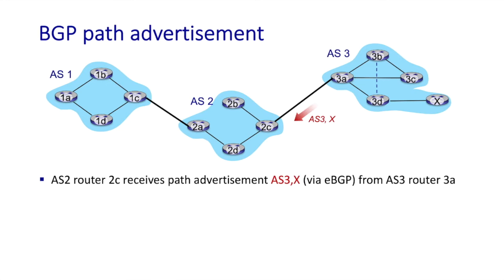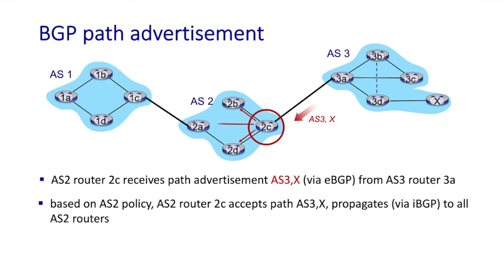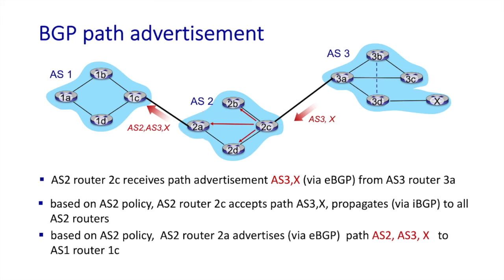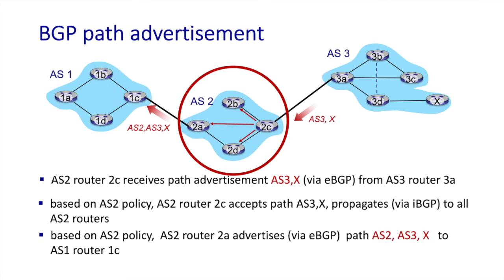Here's an example showing how a path advertisement propagates among and within autonomous systems. Based on policy, router 3a decides to advertise a path to destination X to AS2. AS2 router 2c receives this path advertisement AS3,X via EBGP from router 3a. Based on AS2 policy, router 2c accepts the path AS3,X and propagates it via IBGP to all AS2 routers. Then AS2 router 2a can advertise via EBGP the path AS2,AS3,X to AS1 router 1c. In this manner, AS1 learns about a path to X via AS2 and AS3.